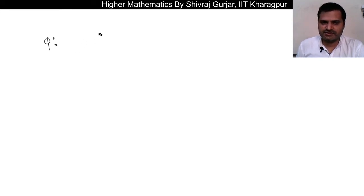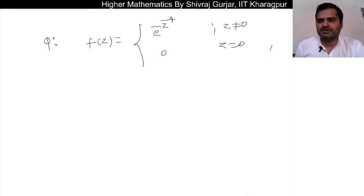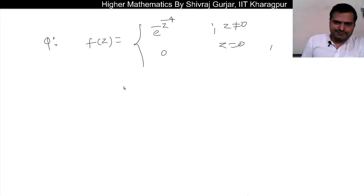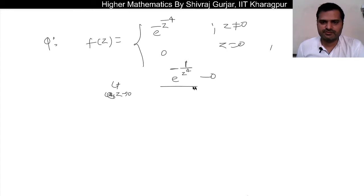This question asks us to check differentiability. f(z) = e^(-1/z⁴) when z is not 0, and 0 when z equals 0. We need to check differentiability at z=0. So basically, we set up the limit: limit z tends to 0 of e^(-1/z⁴) minus 0 divided by z minus 0, which is limit z→0 of (1/z) · e^(-1/z⁴).